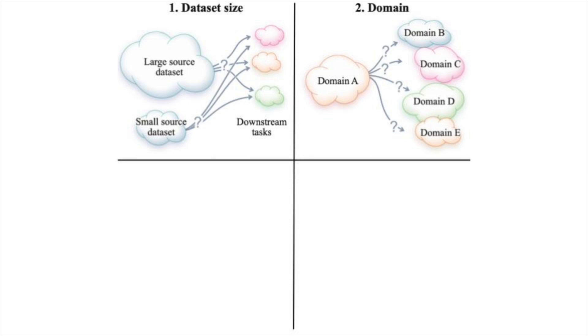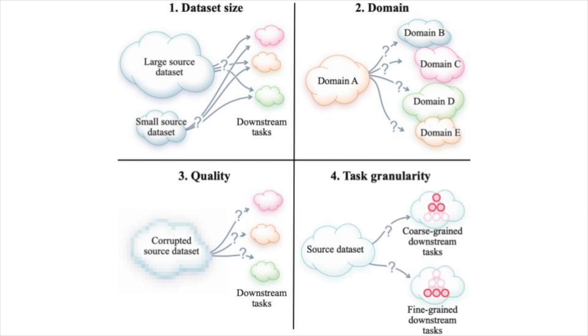Second is data domain. How important is the domain shift between the images used for pre-training and the images used for downstream supervised training? Third is data quality. What happens if your pre-training images are somehow corrupted or distribution shifted with respect to your downstream domain? Fourth is task granularity. Do self-supervised representations work well for fine-grained classification?